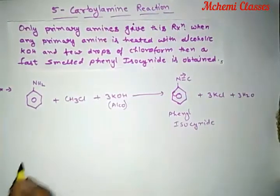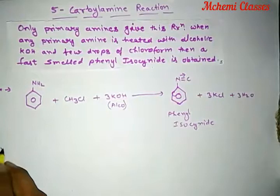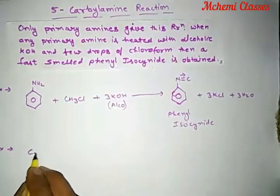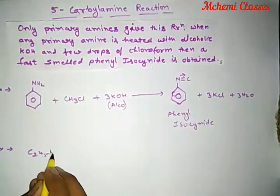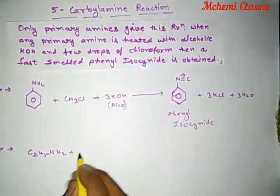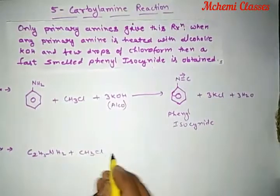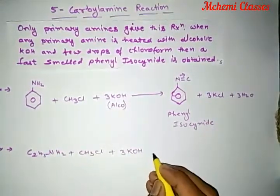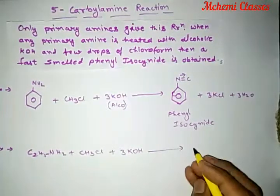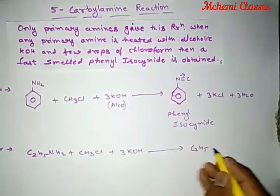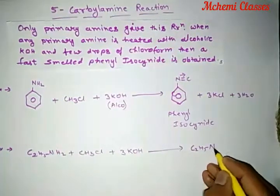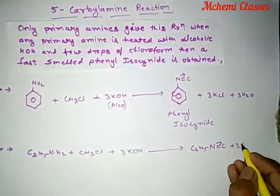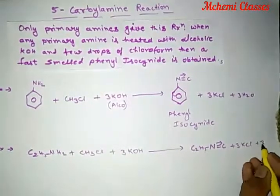One more example: C₂H₅NH₂ (ethylamine) with chloroform and a few drops of KOH — the reaction proceeds and ethyl isocyanide is obtained.